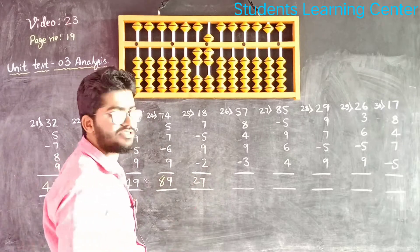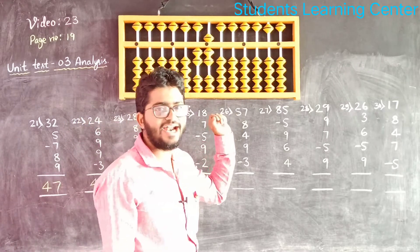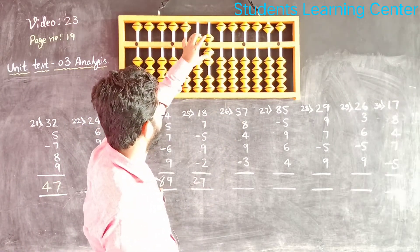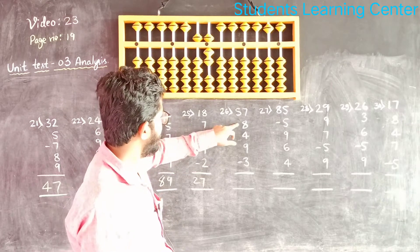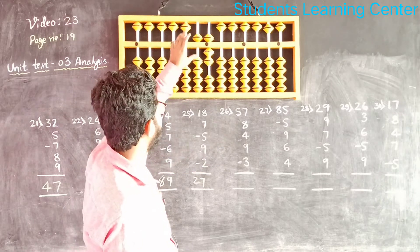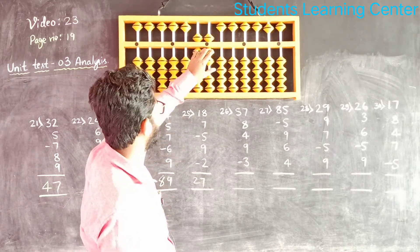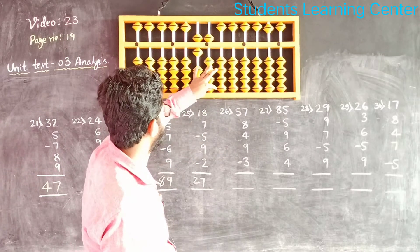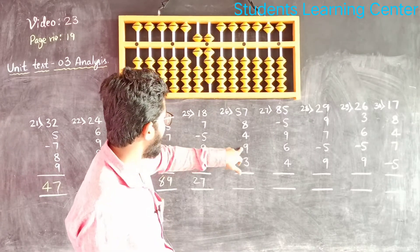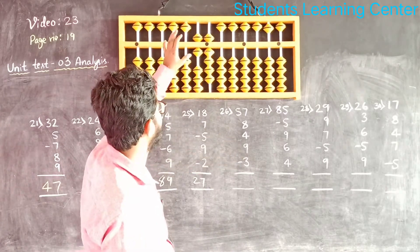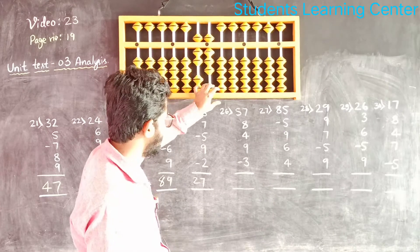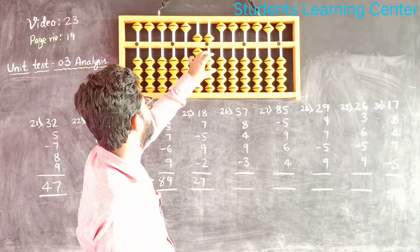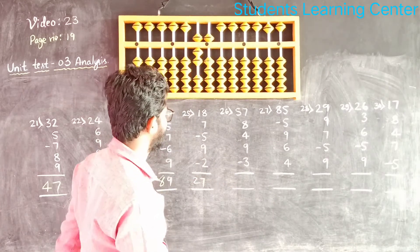Next question. Add 57, add 8, add 10 less 2, add 4, add 9, add 10 less 1, less 3. Answer is 75.